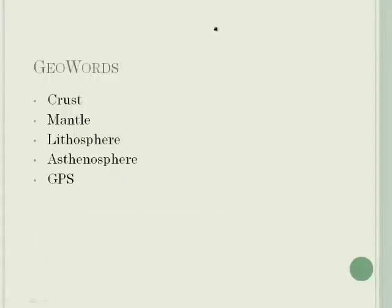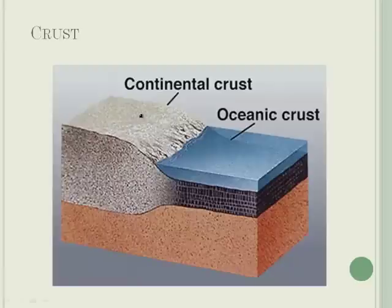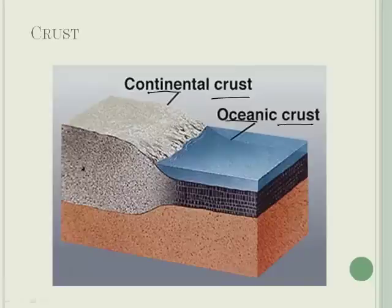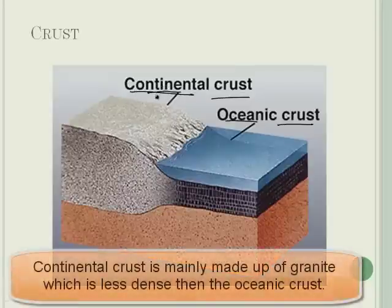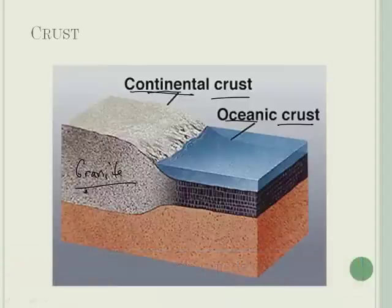We're also going to learn about something called GPS — I bet you even know what that is. Now, it's important to understand crusts. There are actually two kinds: continental crust and oceanic crust. The crust is the outside layer of the Earth. The first kind is continental — that's where you have land. It is primarily made of granite, which is a less dense rock than the oceanic crust.